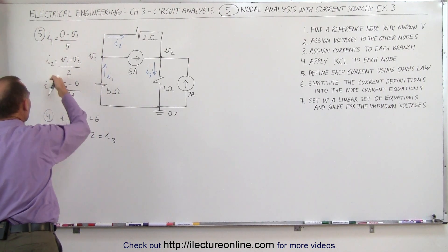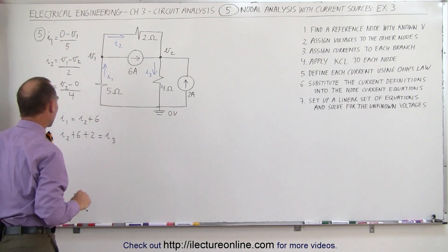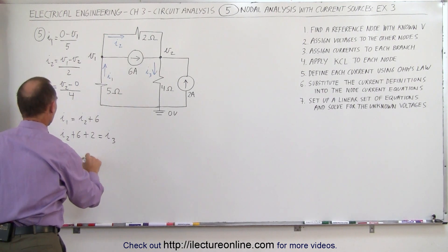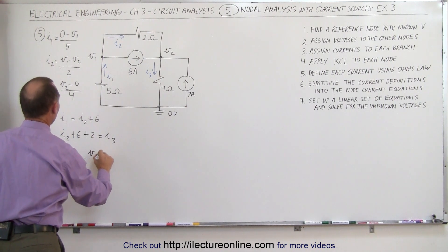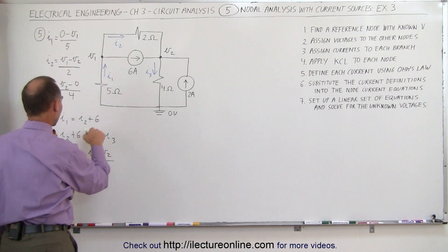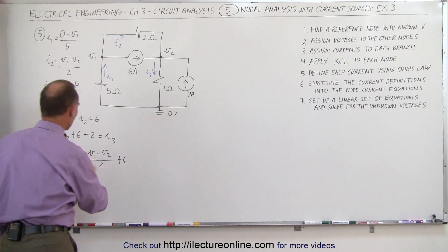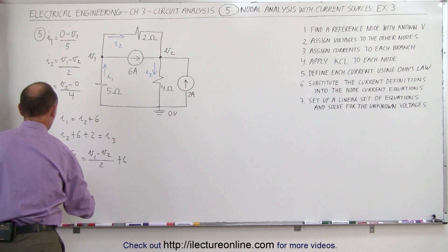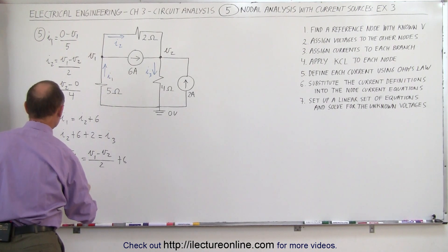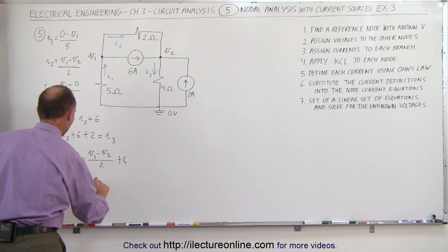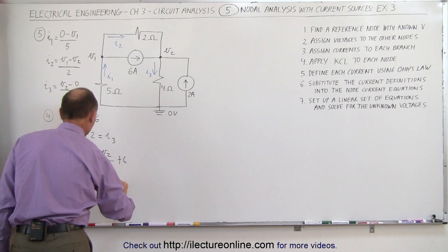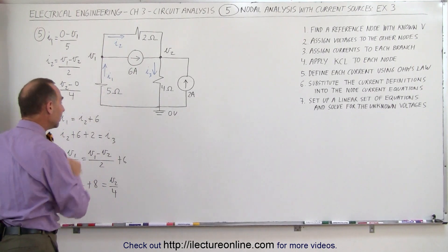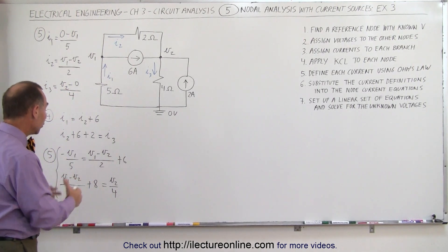The next step — step six — we take the three definitions of current and plug them back into our two equations. The first equation becomes: minus V1 divided by five equals V1 minus V2 divided by two, plus six. The second equation becomes: V1 minus V2 divided by two, plus eight, equals V2 divided by four. We now have two equations in terms of only V1 and V2, so we can go ahead and solve that.